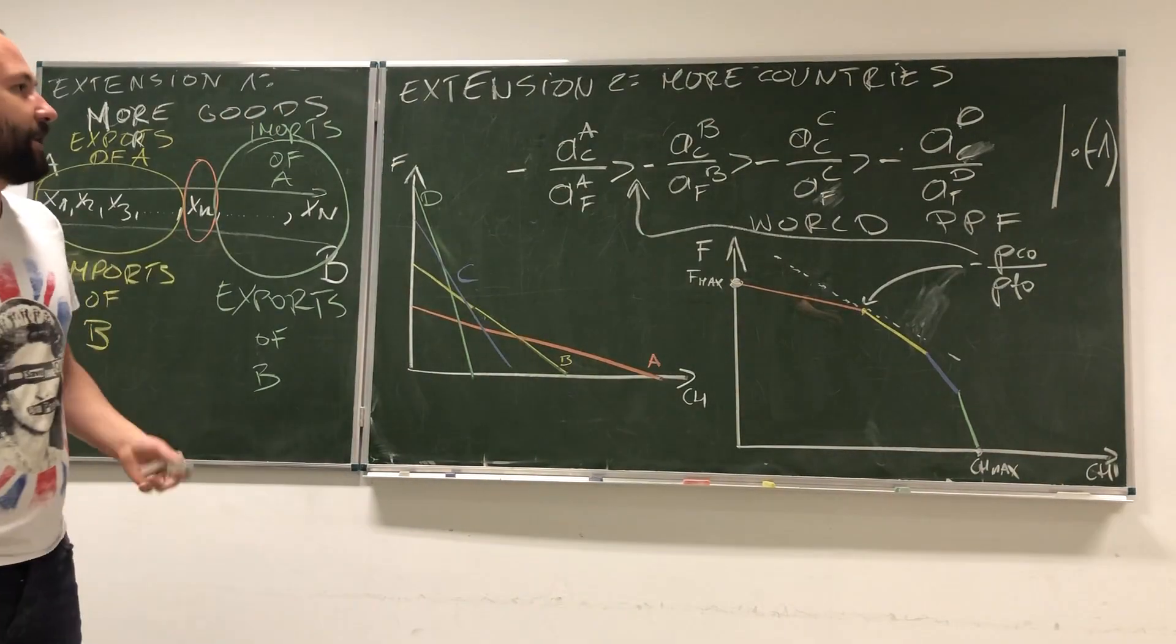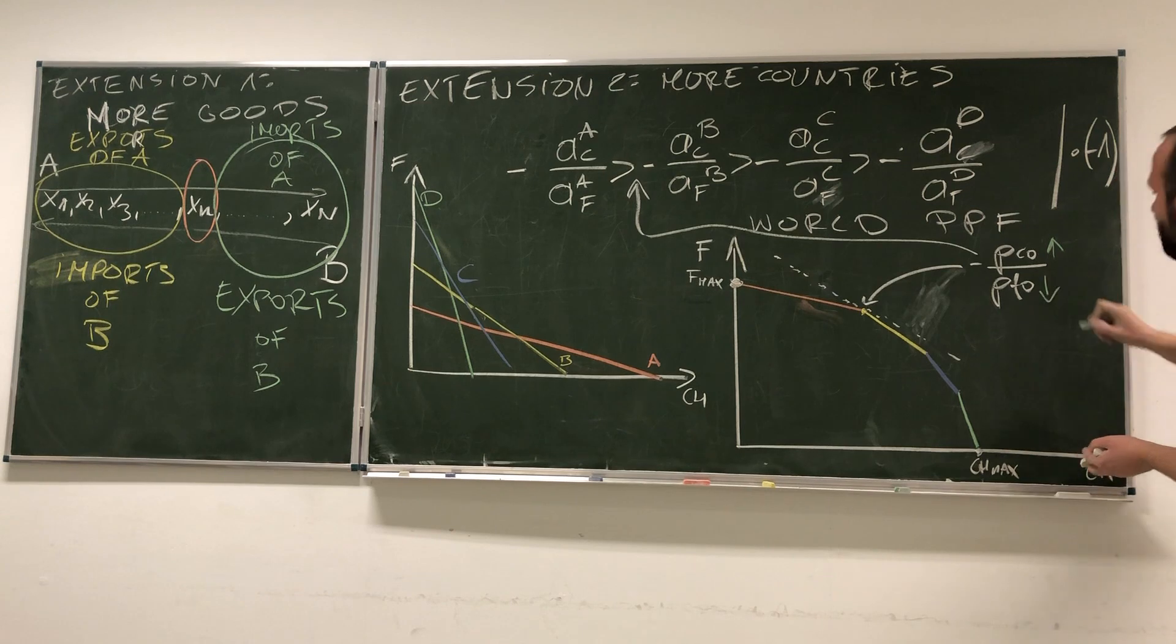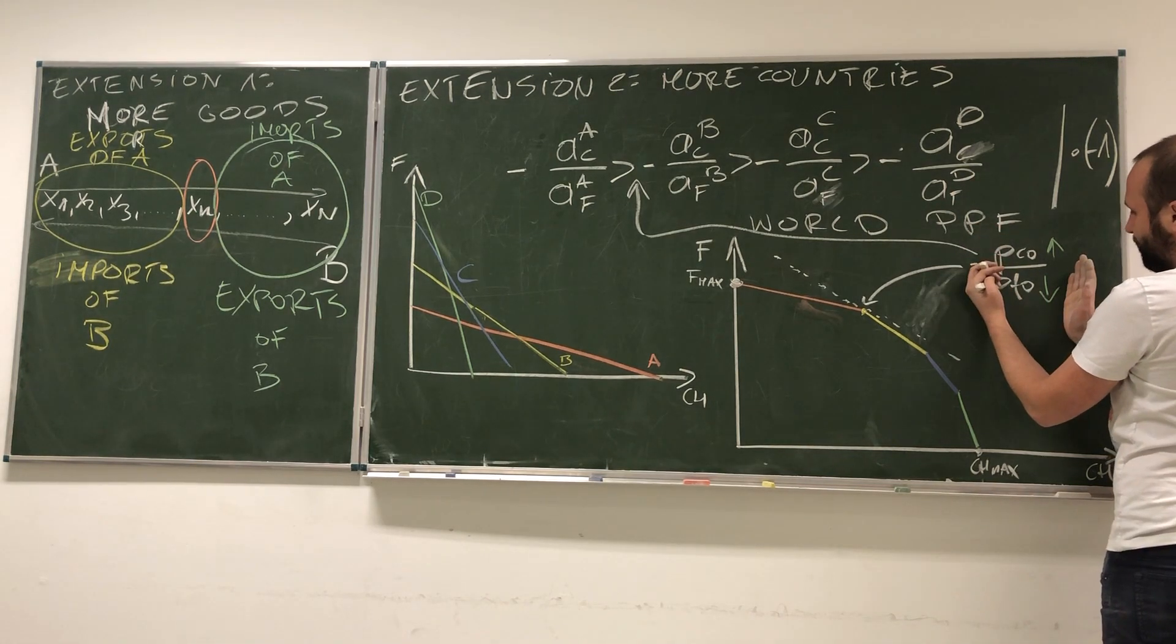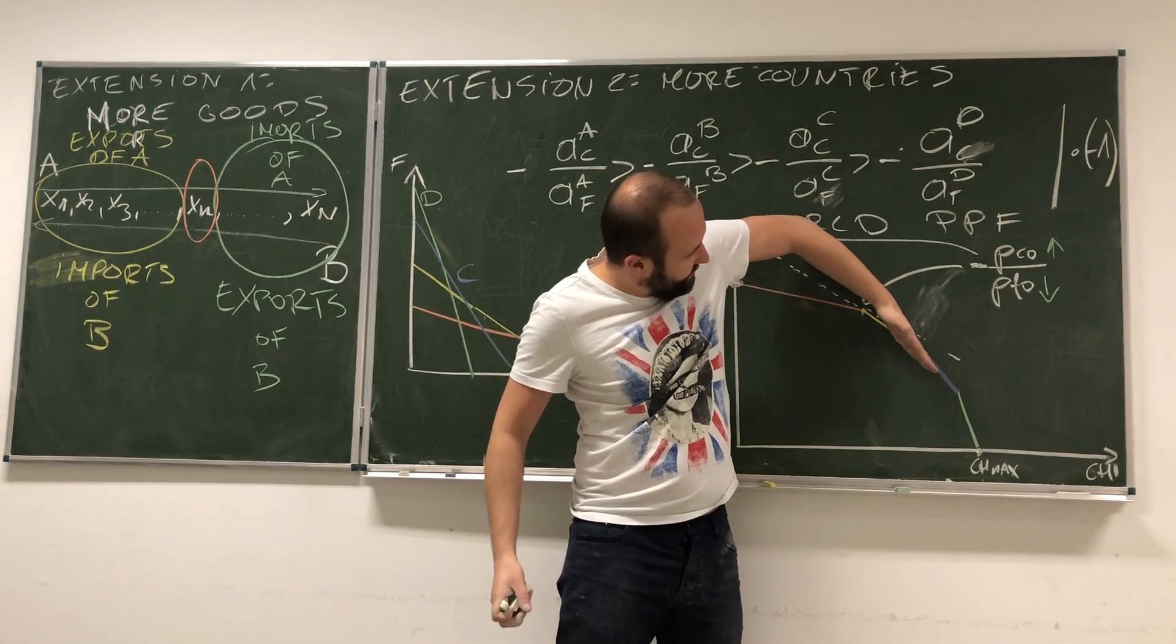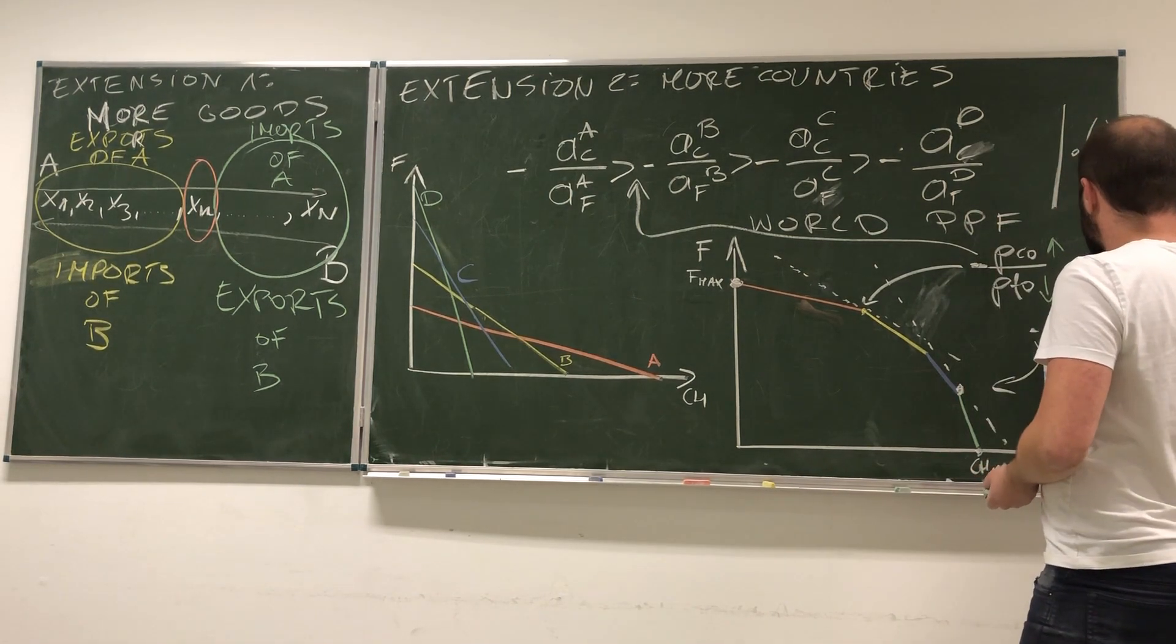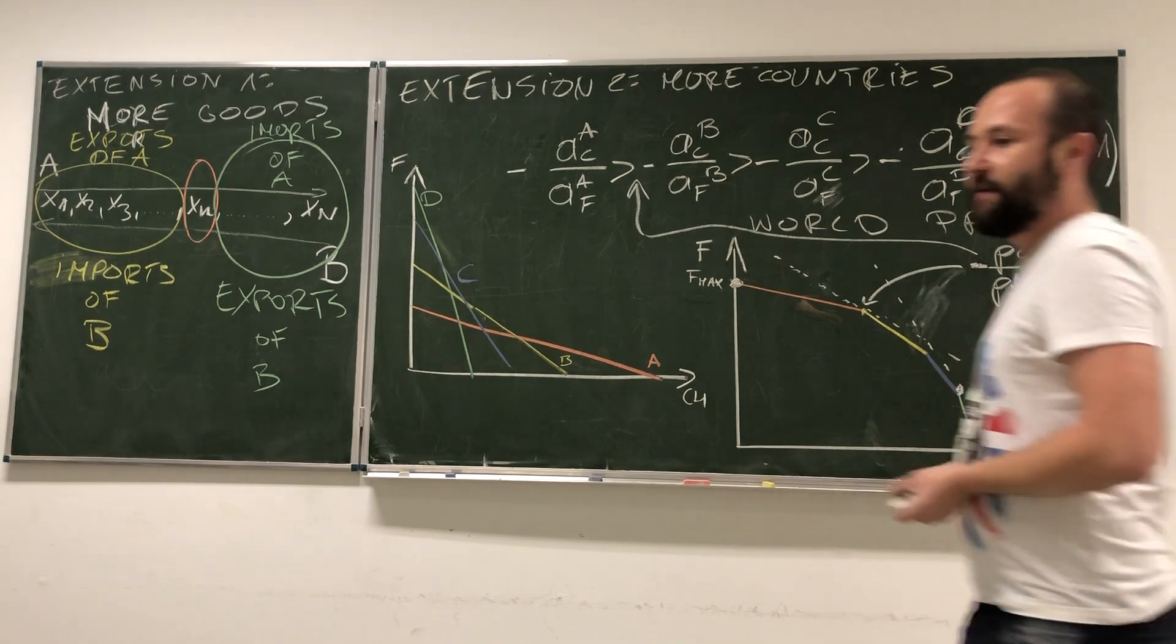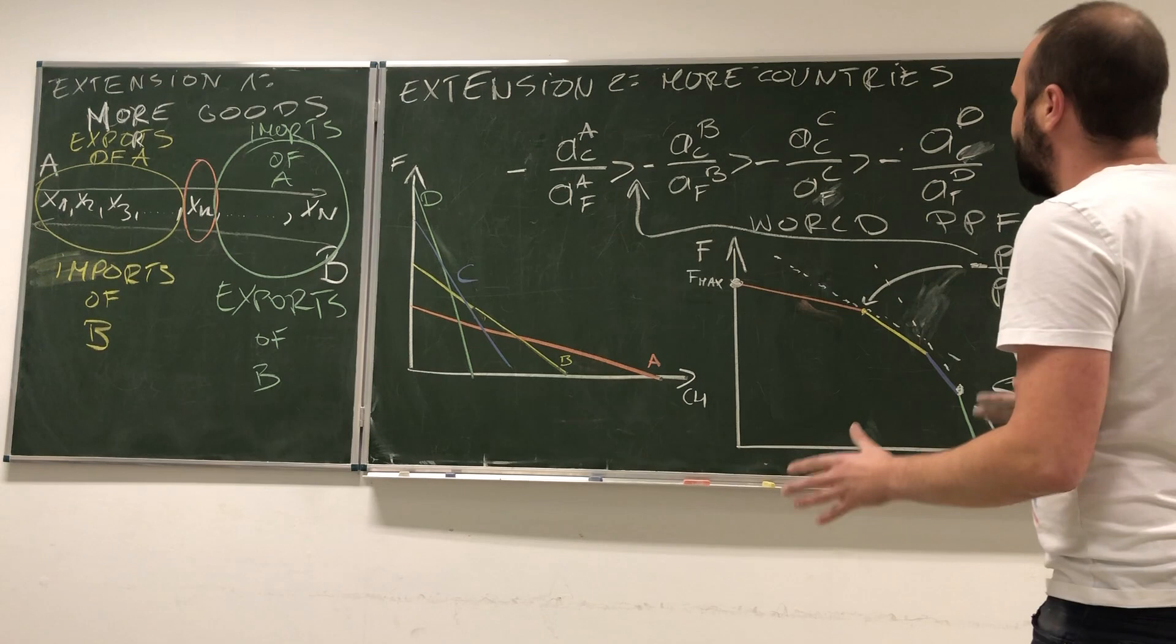But now, what happens if either price of chemicals goes up or price of food goes down? If price of chemicals goes up, this becomes bigger, right? Or if price of food goes down, this whole thing becomes bigger. But because it is minus at the front, it means that this line will be getting steeper and steeper. Let's say that it has become so steep that we ended up here, and now we have some negative P C one over P F one. It could have happened because of two things: either international price of chemicals went up or international price of food went down, which we can assume is beyond the control of the countries and depends on the world demand and supply of these two goods.